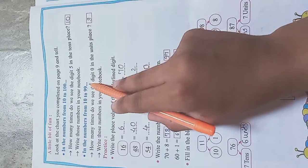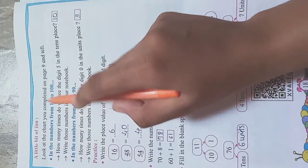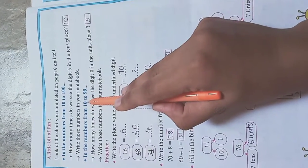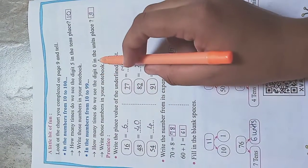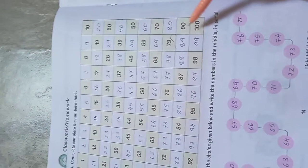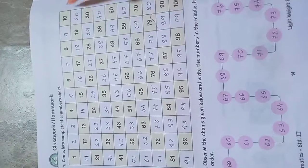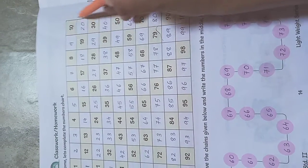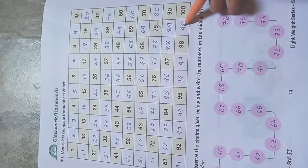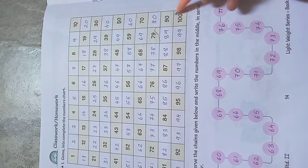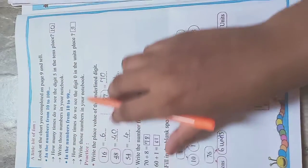In the numbers from 10 to 99, how many times do we see the digit 0 in the units place? 100 is not included. From 10 to 90, counting: 1, 2, 3, 4, 5, 6, 7, 8, and 9. Since the limit is 99, 100 will not come. So from 10 to 90, there are 9 numbers. Write those numbers in your notebook.